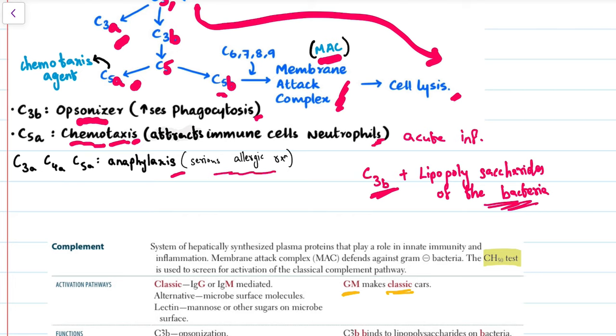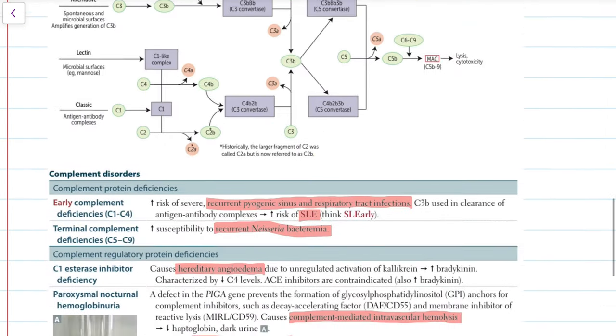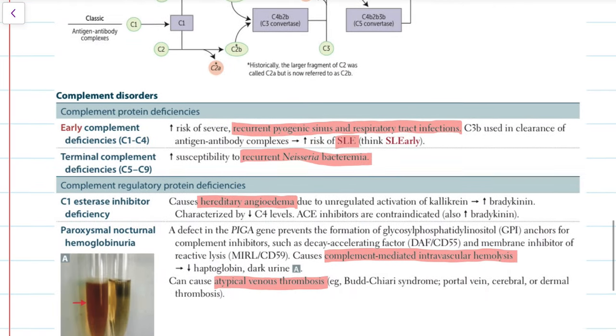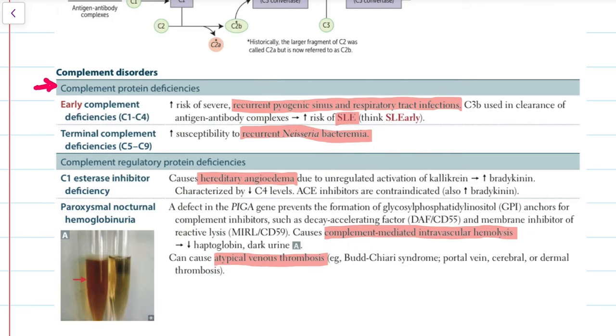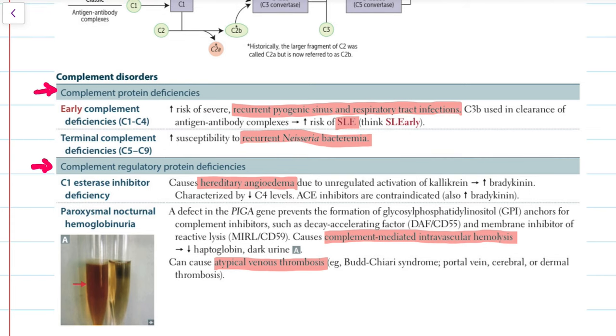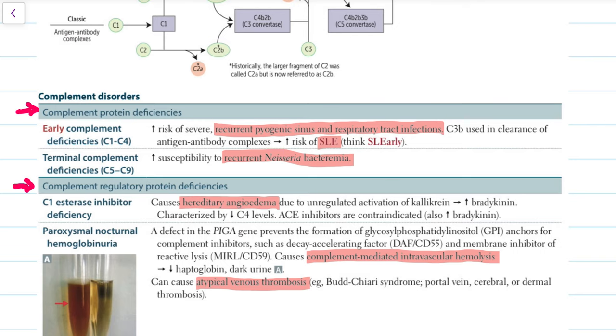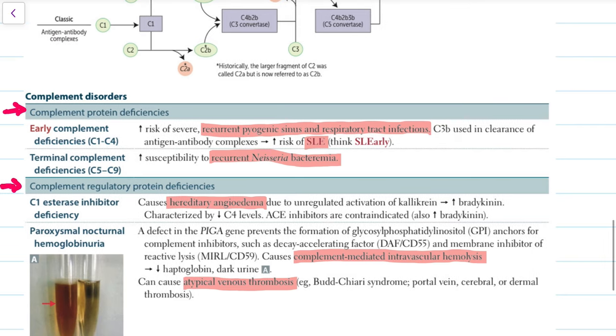Complement disorders can be mainly classified into complement protein deficiencies and complement regulatory protein deficiency. Under complement protein deficiencies, there's early complement deficiency. This actually increases the risk of severe recurrent pyogenic sinus and respiratory tract infections. C3b is used in clearance of antigen-antibody complexes, thereby it increases the risk of SLE.